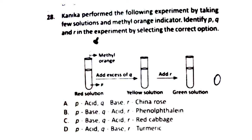Question 28: Kanika performed an experiment with solutions and methyl orange indicator. When methyl orange is added to an acidic solution, it turns red. When a base is added (solution Q), the colour becomes yellow. When another substance is added, the solution turns green. This identifies PQR correctly. The right answer is Option A.